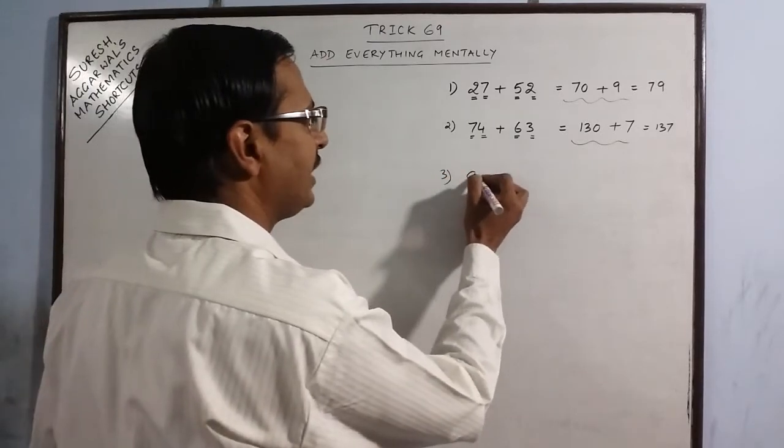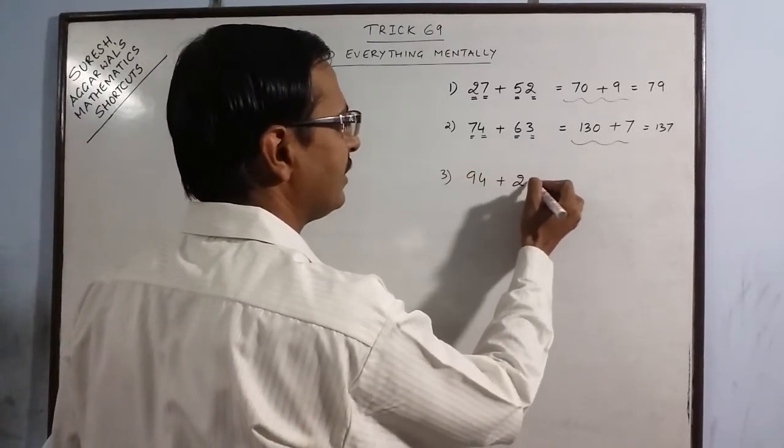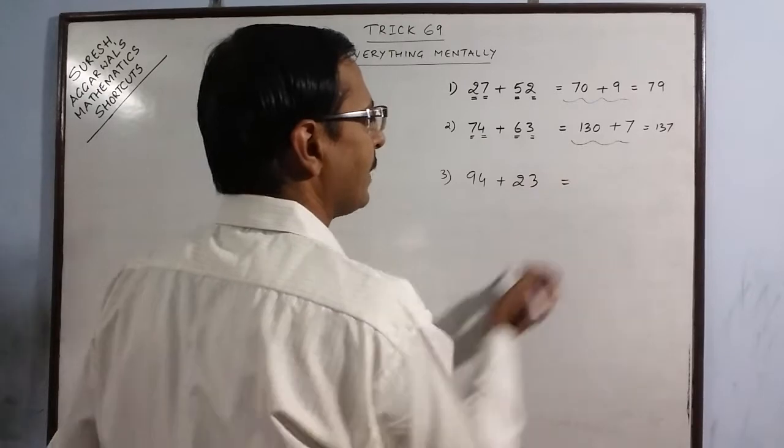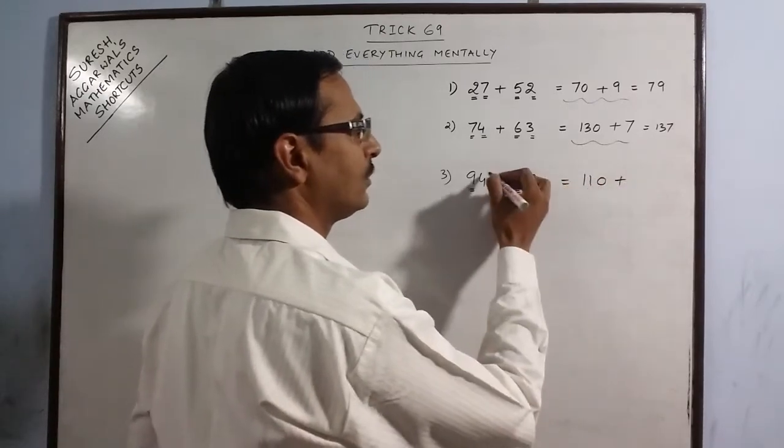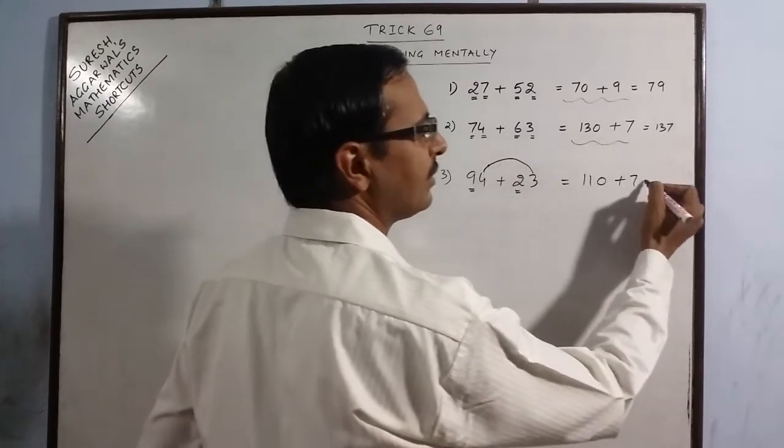Say we have 94 and 23. See 9 plus 2 is 11. Put 1 0. 4 plus 3 is 7. 117.